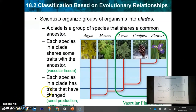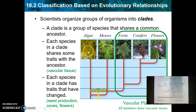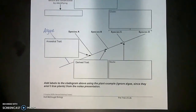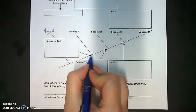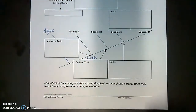In this cladogram, algae is the very first branch that comes off, and then there is a new trait that arises before the other branches — mosses, ferns, conifers, and flowers. That trait is going to be a cuticle, which is just a coating to prevent water loss. Algae don't have that and have to live in water or very wet environments. Having a cuticle allows mosses, ferns, conifers, and flowers to thrive on land. So this hash mark on your cladogram represents the presence of a cuticle — you can label that there.